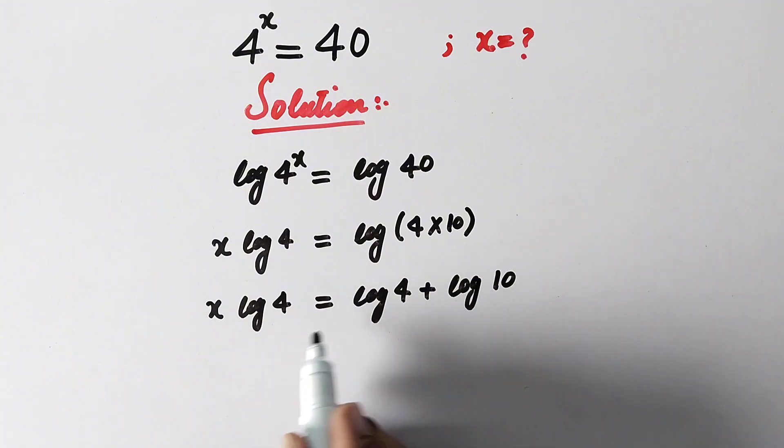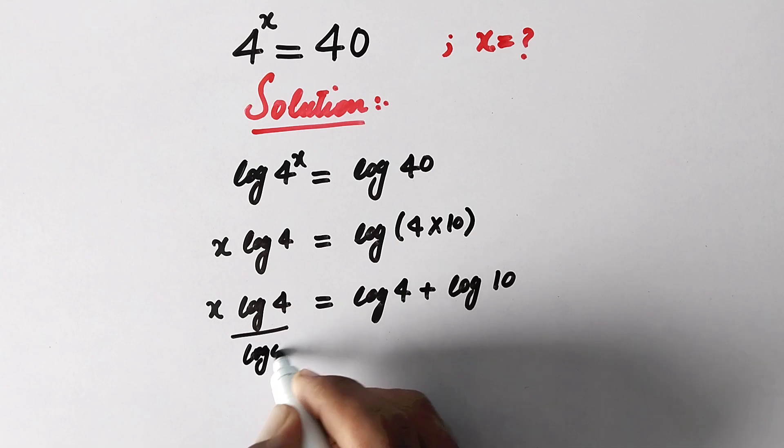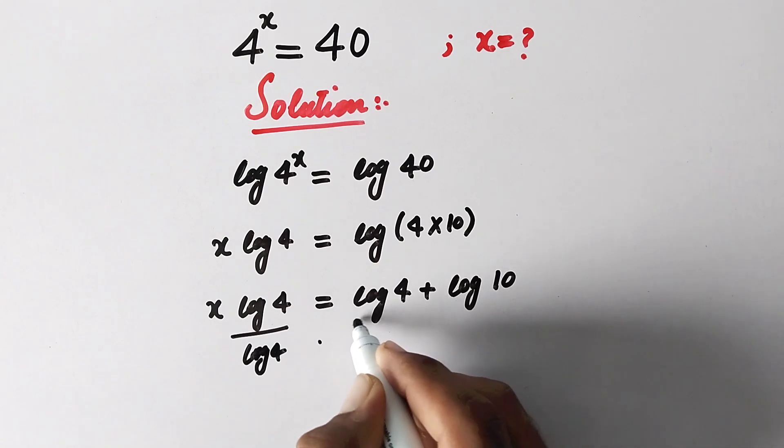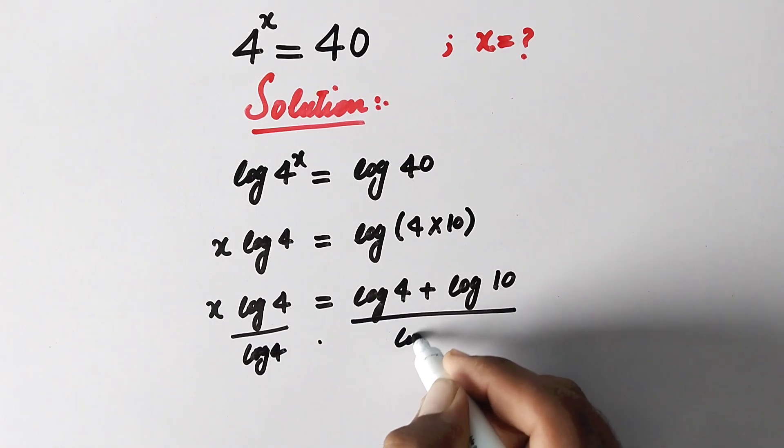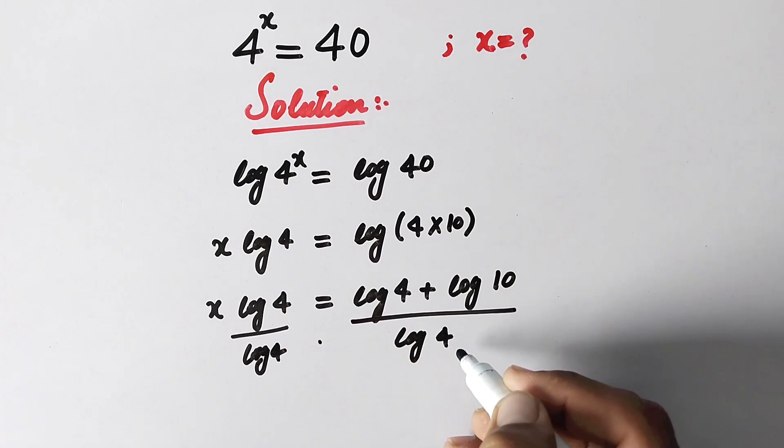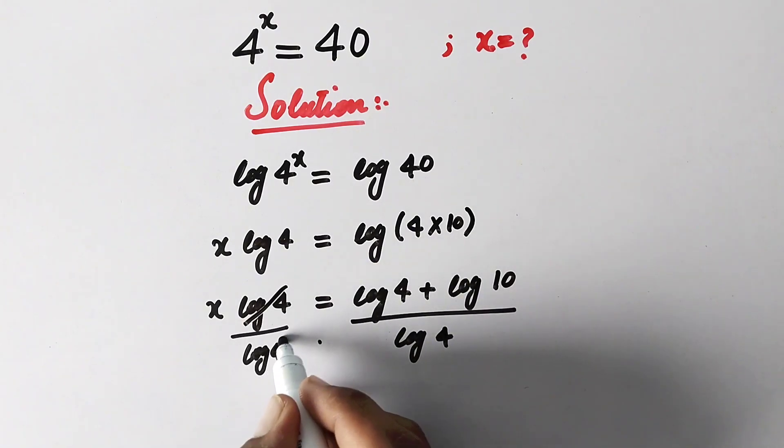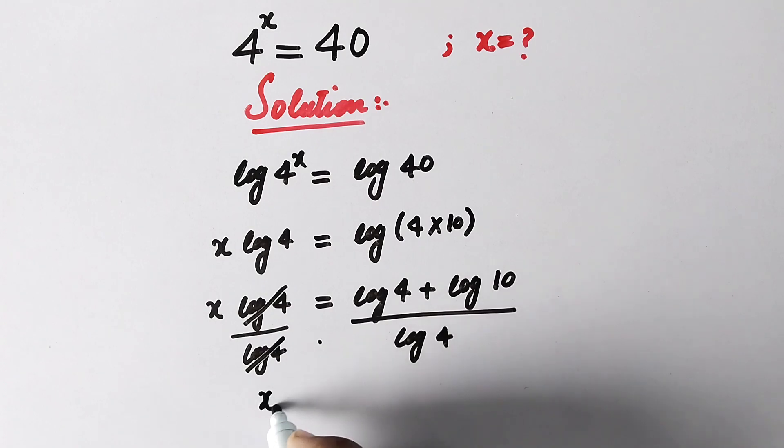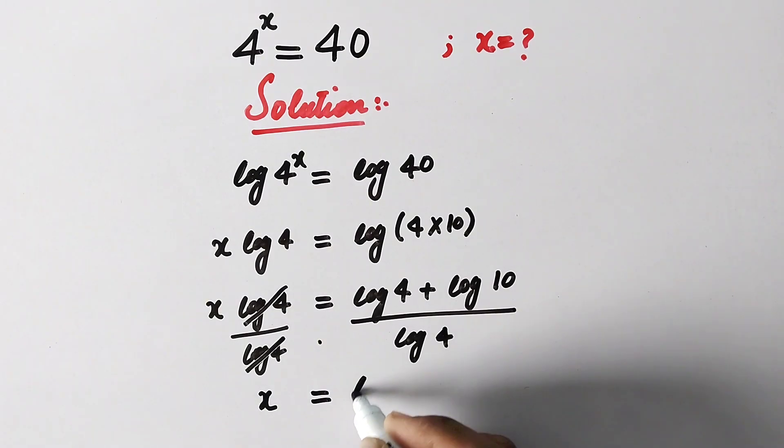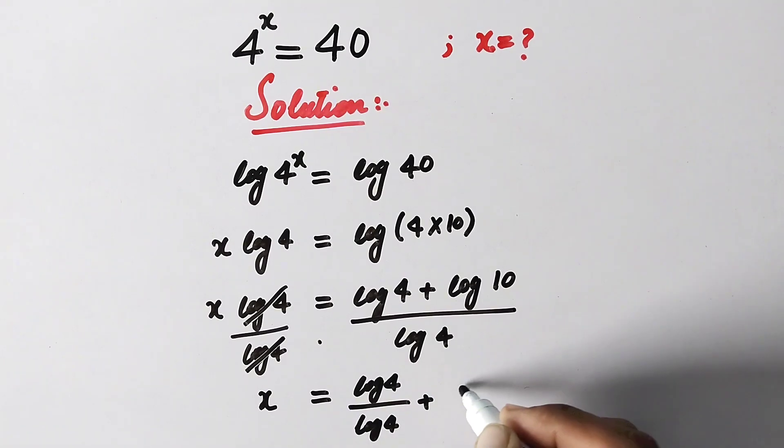And now here we will divide both sides by log of 4. This log 4 will cancel out this log 4, and x is equal to log 4 over log 4 plus log 10 over log 4.